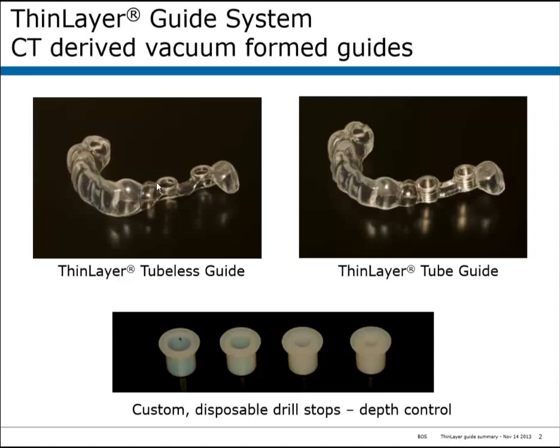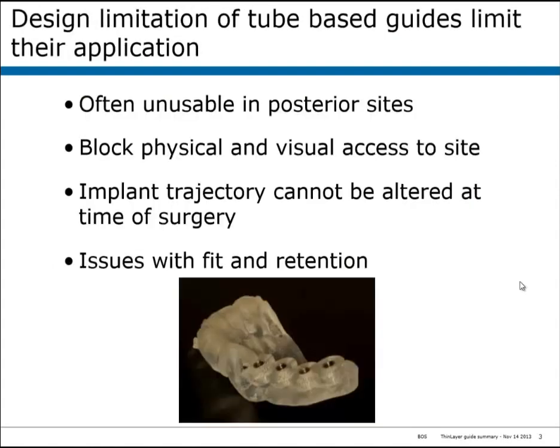These two guides are identical and both CT-derived, except that one does not have a tube in it. Conventional tube guides have design limitations that limit their application. They're often unusable in posterior sites because of the stacking effect of the drill above the tube requiring extra vertical clearance. They often block physical and visual access to the site, the implant trajectory cannot be altered at the time of surgery, and there are also issues with fit and retention.